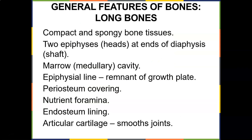General features of long bones: there's compact and spongy bone tissue. Two epiphyses — the heads — sit at the ends of the diaphysis, or shaft. You have a medullary cavity for marrow and an epiphyseal line, the remnant of the growth plate. While a child or adolescent is growing, we call that the epiphyseal plate. A fracture in the growth plate can force it to shut down prematurely, affecting height or limb length. There's also a periosteum covering, a nutrient foramen, an endosteum lining, and articular cartilage to smooth the joints.